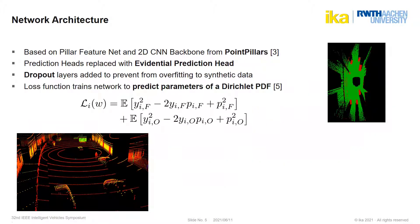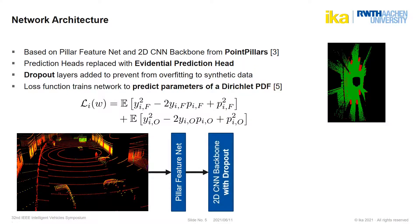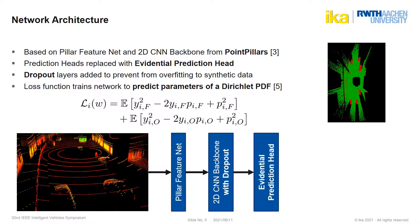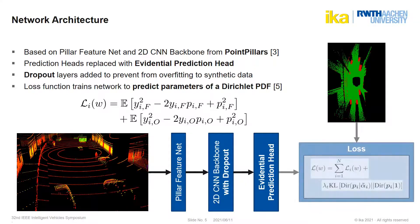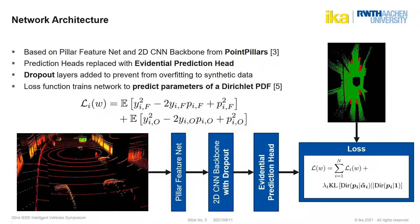We based our work on the popular PointPillars network architecture, which performs well for object detection in LiDAR measurements. The point cloud is converted into pillars by the pillar feature net, and a 2D CNN backbone converts it into a higher-level representation. We added dropout layers to the backbone to prevent overfitting to the synthetic training data. Instead of the original prediction heads, we added an evidential prediction head — a 2D convolutional layer with two channels containing evidence for each cell being free or occupied. We used a loss function inspired by the work of Saint-Loy et al., which trains the network to predict the parameters of a Dirichlet probability density function. Thus, the neural network quantifies first- and second-order uncertainty, predicting a PDF over the probabilities of a cell being free or occupied and generating no evidence for unknown areas.